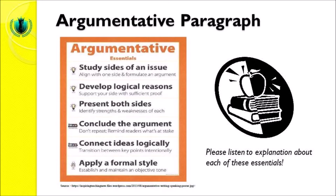Let me explain each one of these essentials and I will give you an example of an argumentative paragraph. The first essential is study sides of an issue. It means that we align with one side and formulate an argument. We first need to find what issue we want to raise — this issue is related to the topic of the argumentative paragraph. We have to pick an issue and then choose one side.